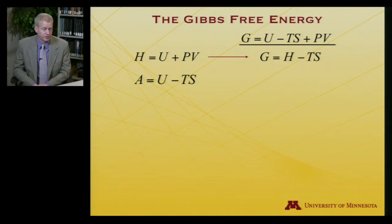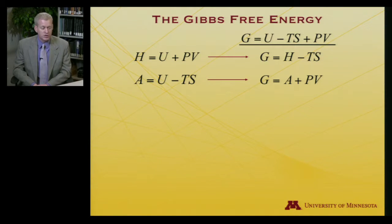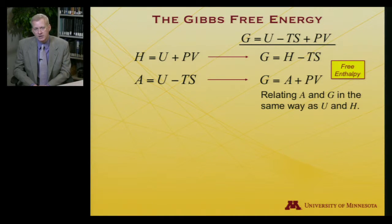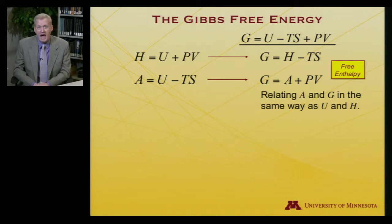We can also relate G to the Helmholtz free energy. A equals U minus TS, so G equals A plus PV — the Helmholtz free energy plus a pressure-volume term. You can see that A relates to G in the same way as U relates to H: each after addition of PV gives the other. In German usage, the Gibbs free energy is called the 'free enthalpy' rather than free energy, because it is PV added to the Helmholtz free energy — which actually helps keep them straight.